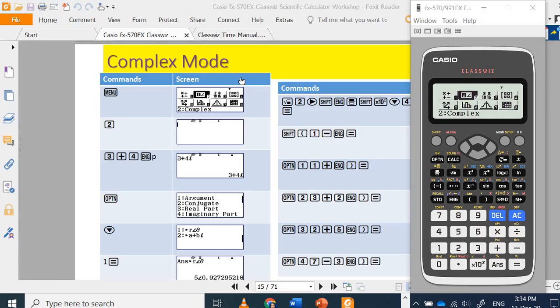Today I'm going to show the complex mode or menu in the Casio FX-570EX Plus calculator. We have board number 2. Number 1 is complete. Number 2 is the complex menu.